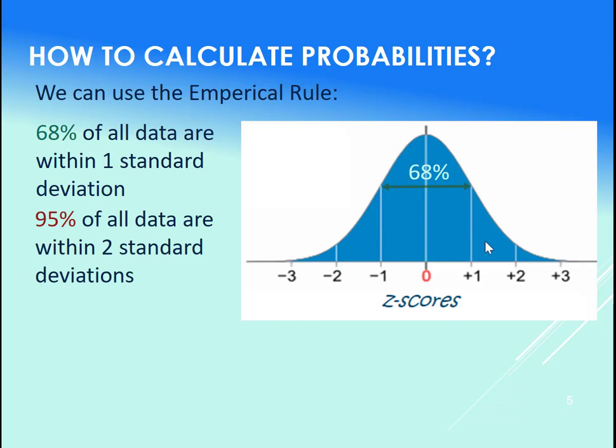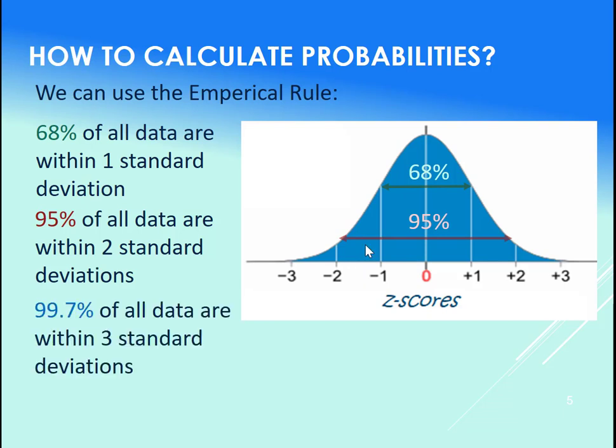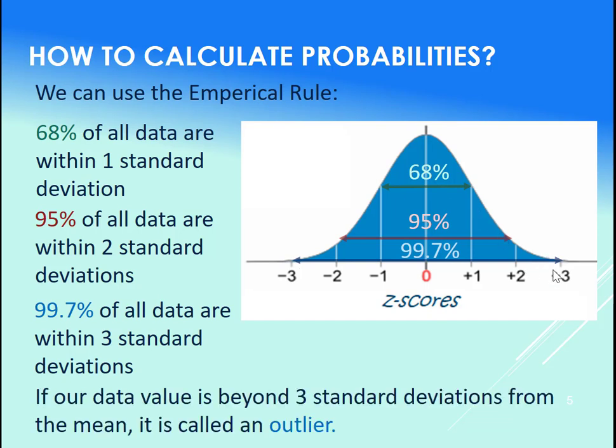95% of our data are within two standard deviations away from the mean, here we are. And 99.7% of our data are within three standard deviations. So from the minus three to the three.